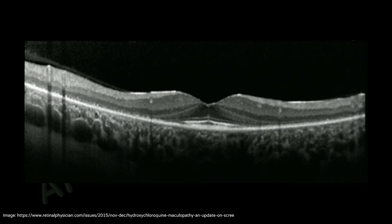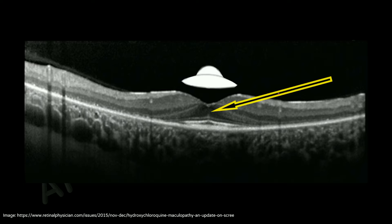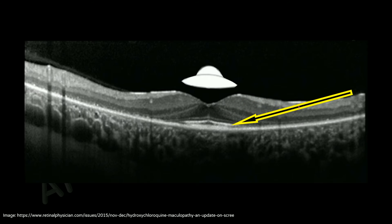In well-established cases, you often get features that make the macula look like a flying saucer. This hypo-reflective space corresponds to the dome of the flying saucer, and this area corresponds to the rest of the flying saucer.